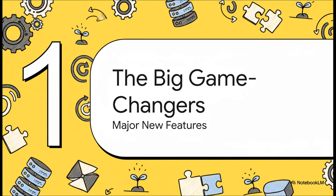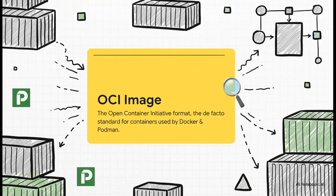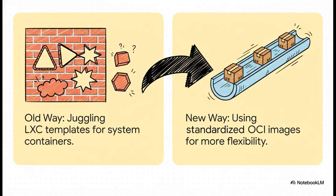This is the part you've been waiting for. We're kicking things off with the big game-changers — the features that open up brand new ways to use and manage your Proxmox environment. The first one is huge: OCI image support. If you've ever touched Docker or Podman, you've used OCI, or Open Container Initiative, images. It is the universal standard for containers, and bringing it to Proxmox is a massive move. Before, you were kind of stuck using specific LXC templates. But now you can pull and run containers directly from the same standard OCI images you use everywhere else. This plugs Proxmox right into that massive container ecosystem — a whole new level of flexibility.